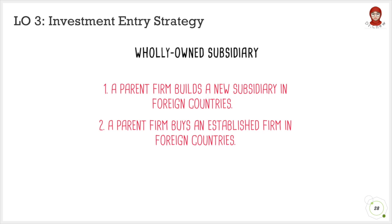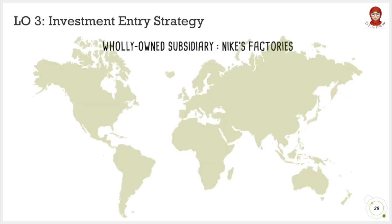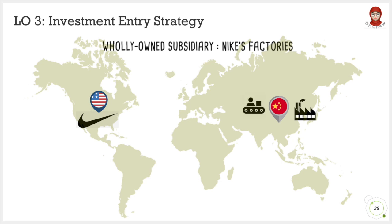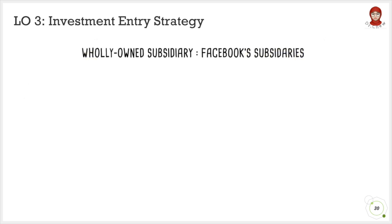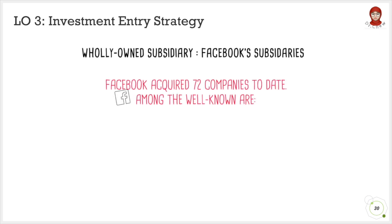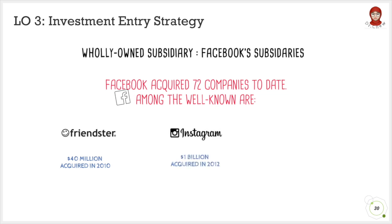Under wholly-owned subsidiary, here is the example of Nike, based in the US, forming a new subsidiary from the ground in China. Nike's manufacturing factories are scattered around 42 countries with the highest number of employees in China. Another example is Facebook buying other companies — among the well-known companies bought by Facebook are Friendster, Instagram, and WhatsApp, all belonging to and owned 100% by Facebook.